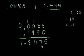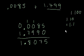It seems complicated, but all you have to do is line up the decimal points, add zeros where appropriate, and add. And if you know how to add, you already know how to do this.